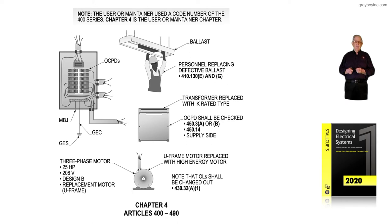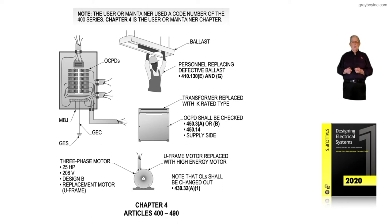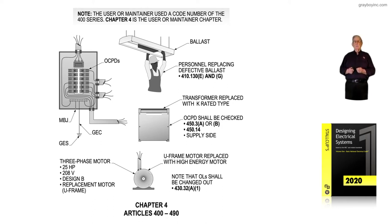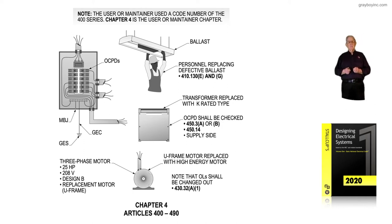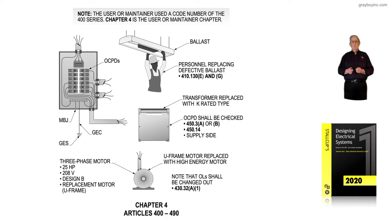The overcurrent device shall be checked — if it's a transformer — by 450.3A or B, and 450.14 for the disconnect and the supply side. Notice the transformer is replaced with a K-rated type transformer, meaning that's usually for computer systems and sensitive electronic equipment. Since it's a replacement, we'd go to Article 450 to handle that.